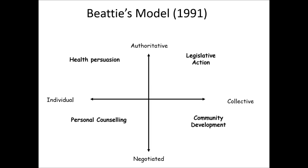Let's do a couple of quick examples. Looking at the top right quadrant — legislative action — BT argues this is an authoritative, top-down approach focused on a collective or population level. Some examples might be the smoking ban, which is a top-down policy with no choice in the matter, aimed at a population level. Other examples might be minimum pricing on alcohol, which again is a policy direction aimed at populations.